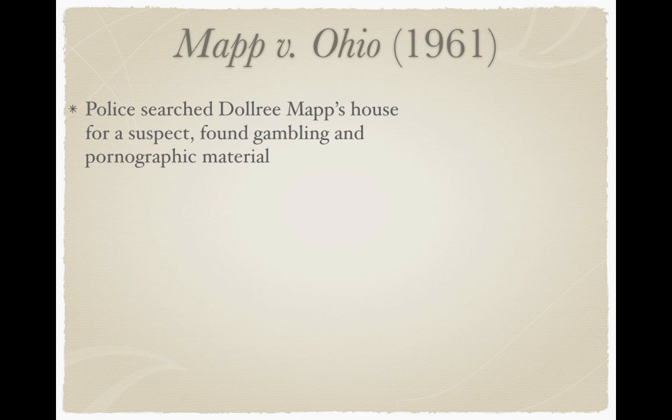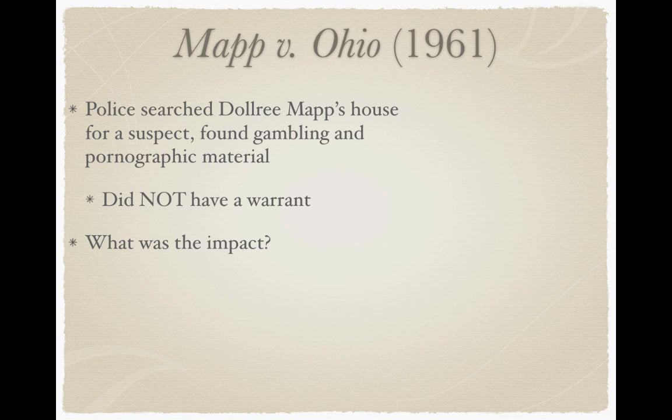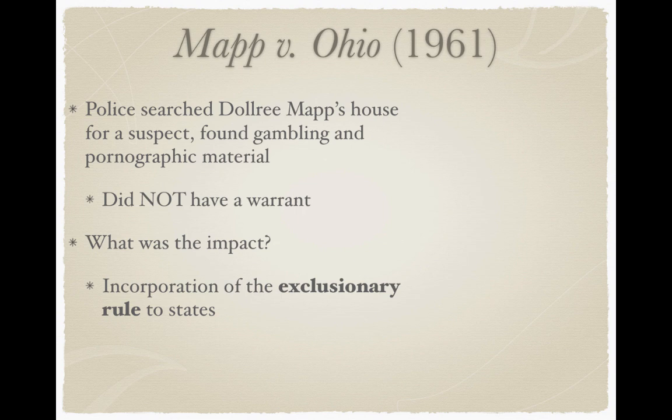Mapp v. Ohio from 1961: Police searched Dollree Mapp's house for a suspect and found gambling and pornographic material, but they did not have a warrant. The impact is the incorporation of the exclusionary rule to states. The exclusionary rule — already applied to the federal government — was now applied to states. It states that illegally obtained evidence cannot be used in court, so if police gather evidence without a search warrant or probable cause, it will likely be inadmissible.